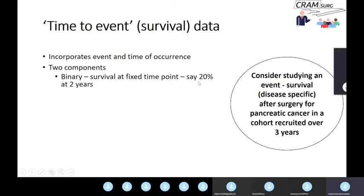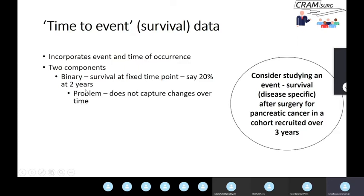But saying 20% survived for two years doesn't tell you what happened after two years for that 20% — were they cured, or were they all dead by three years? At the same time, you're saying nothing about the 80% who died by the second year: whether they died from surgical complications within the month, or all died towards the end of the first year. This binary way of looking at survival does not really capture changes over time.